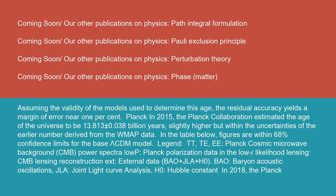Planck: In 2015, the Planck collaboration estimated the age of the universe to be 13.813 plus or minus 0.038 billion years. Slightly higher, but within the uncertainties of the earlier number derived from the WMAP data. In the table below, figures are within 68 percent confidence limits for the base Lambda-CDM model.